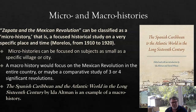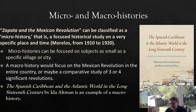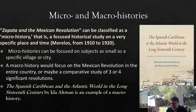Micro histories can be focused on a very small subject, for example a village or a city — there have been plenty of histories written about Cartagena, Seville, and Havana. A macro history, by contrast, would focus on the entire Mexican Revolution, or it could be a comparative study of the Russian Revolution, the Chinese Revolution, and the Mexican Revolution.